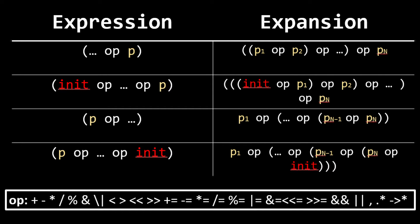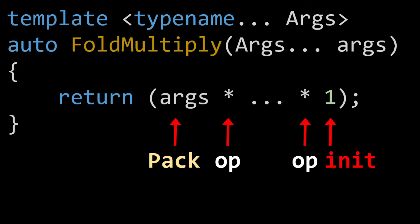Fold Expressions can either be unary or binary — unary in the sense that the fold is to the left or right of an operator, and binary when it's in between two. When I say fold, what I really mean is the parameter pack, represented by those three dots. The first and third rows in this table show us unary fold expressions, and the second and fourth show us binary. P represents an expression that contains an unexpanded parameter pack. Init represents an expression that does not contain an unexpanded parameter pack. Op is any of the binary operators listed at the bottom of this table. In our previous example, that was the one in args times parameter pack times 1 — one was the init.